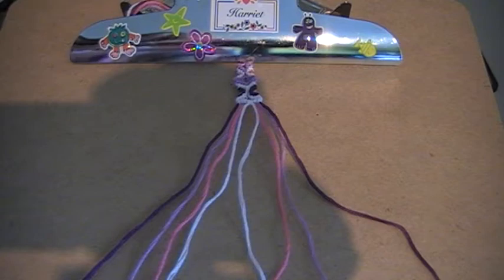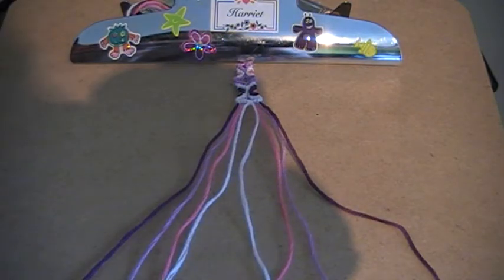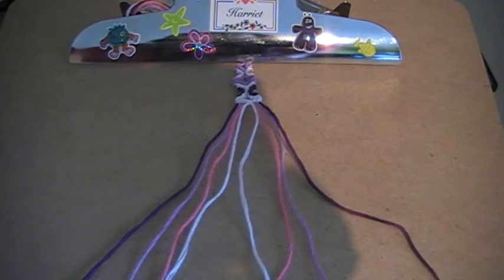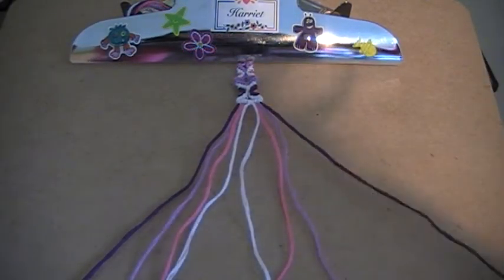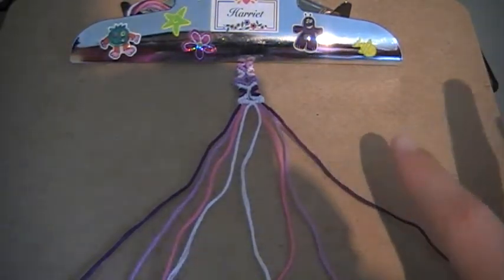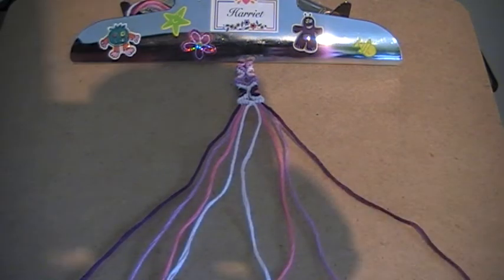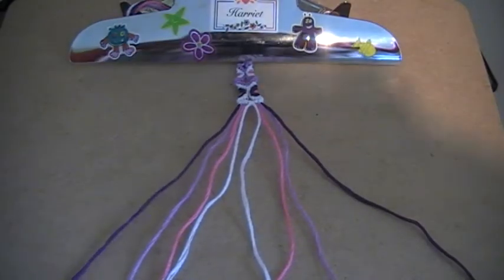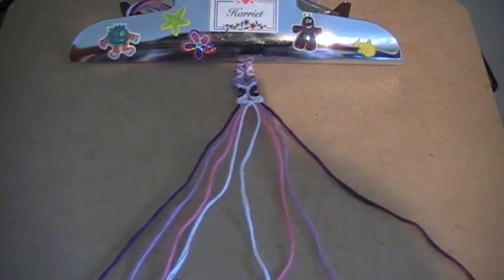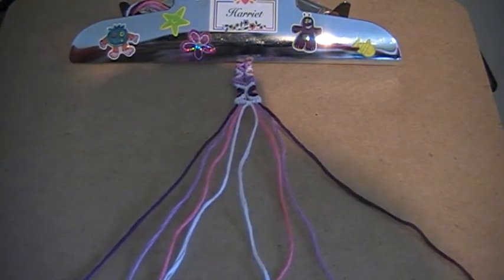For this, I'm using embroidery floss like these, and what you're going to need is four colours. So I've got a dark purple, light purple, a pink, and a white. You'll need to cut a length of each of these colours a good arm span long, because this bracelet uses thread up really quickly, so you don't want to run out.